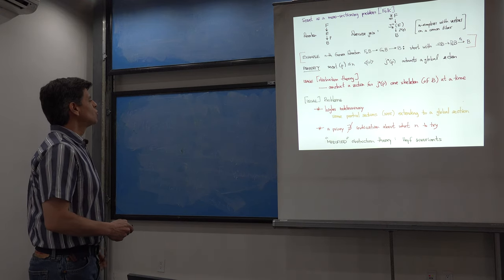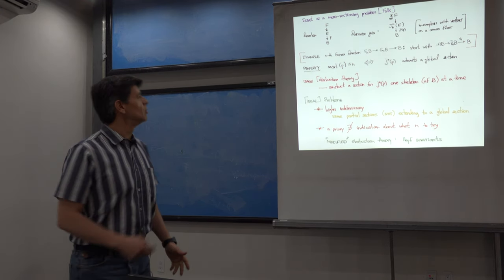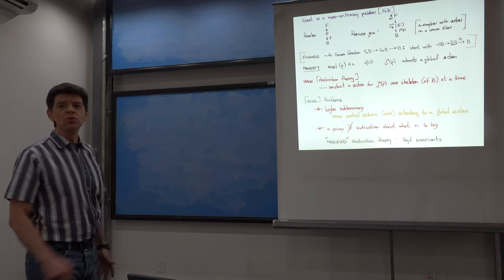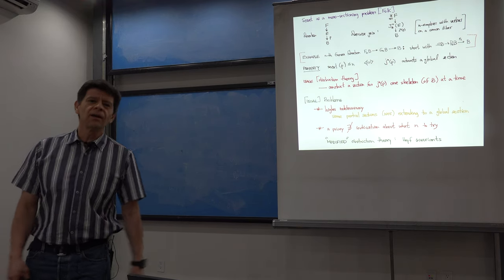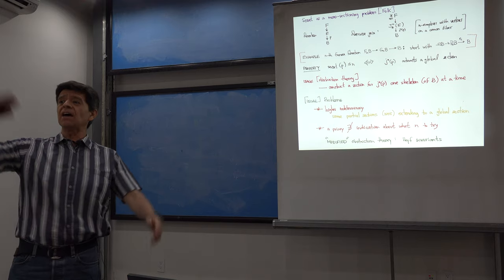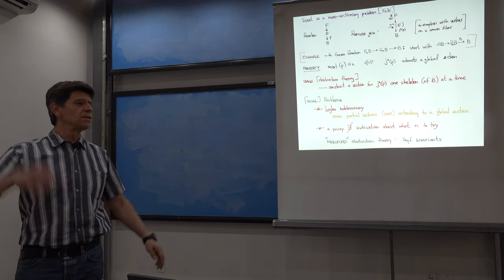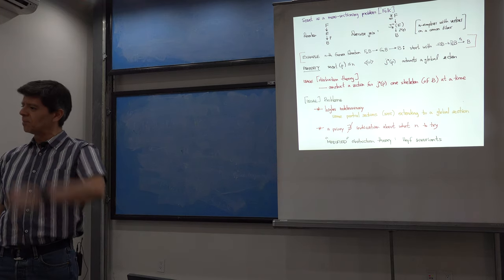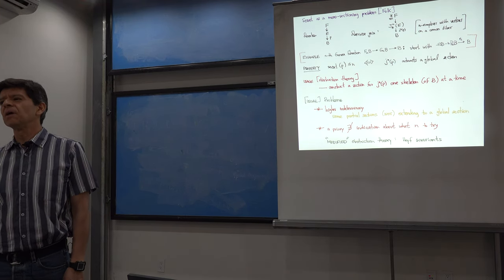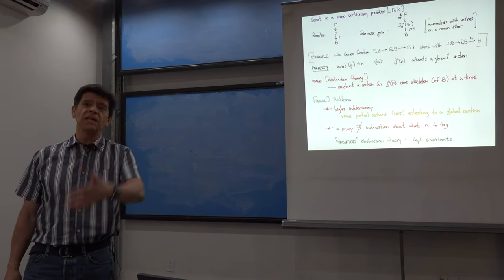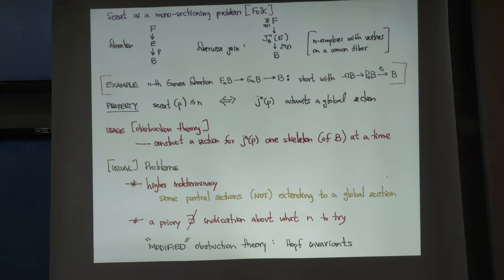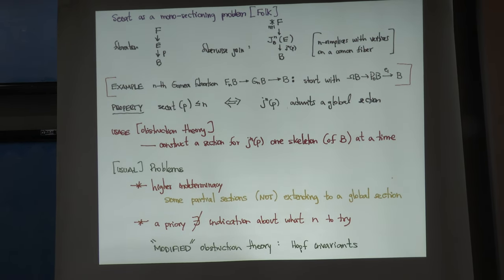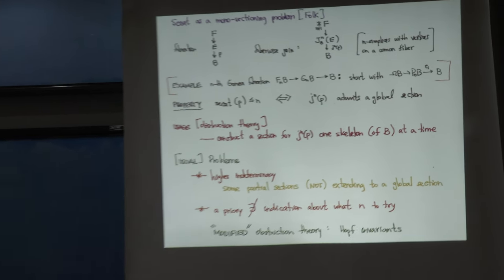Here is another motivation for the modification I want to introduce — the Hopf invariants approach. There is no indication of which N to try when using obstruction theory. You might try N equal to 15, start doing obstruction theory, and after a couple of months or years realize you could solve the problem, but 15 was not the right answer. I would like a better way to decide which N to try. The solution will come from a modified obstruction theory.